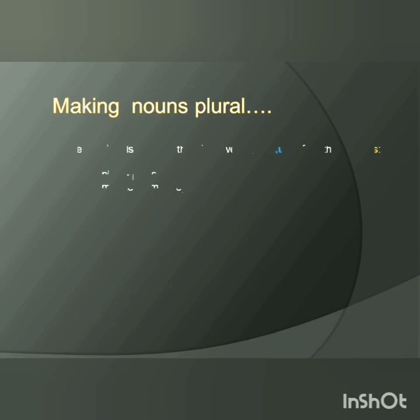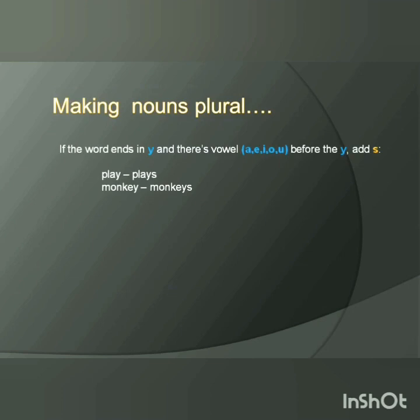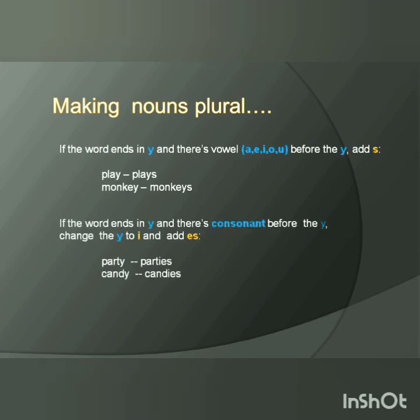Two more advanced rules: if the word ends in Y and there is a vowel — A, E, I, O, U — before the Y, add S. Like play, plays; monkey, monkeys. Play ends in Y and the letter before Y is A, which is a vowel. If the word ends in Y and there is a consonant before the Y, change the Y to I and add ES. Like party, parties; candy, candies. Party ends in Y and before Y is T, which is a consonant, so Y changes to I and we add ES.